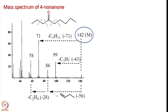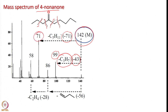Now let us look into the mass spectrum of 4-nonanone. These are the possible sites of cleavage. The parent ion peak is at 142; due to the loss of a C3H7 fragment (43 mass units), we get a peak at 99. Due to the loss of the C5H11 radical (71 mass units), we get a peak at 71. And if we lose C2H4, we get a peak at 58. Work out the remaining fragments and try to interpret the differences between them.